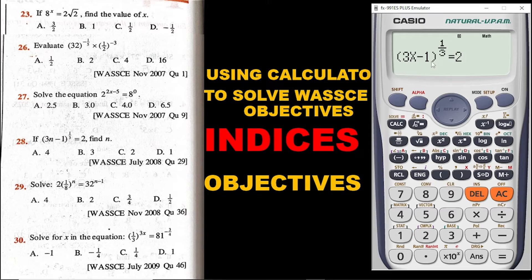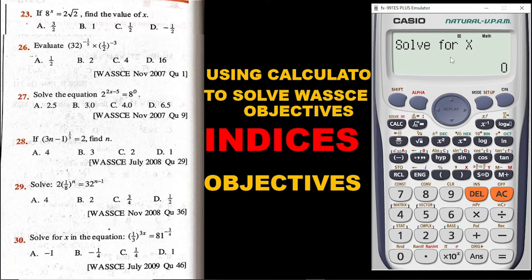This equation is having a variable, so to get it solved you always press shift and then press solve. It will ask what value of x to use — use 0. Click on 0 and then press is equal to. The calculator says the right answer is 3. Going through the options, you can see 3 is there — that is option 2 — and then you pick it.